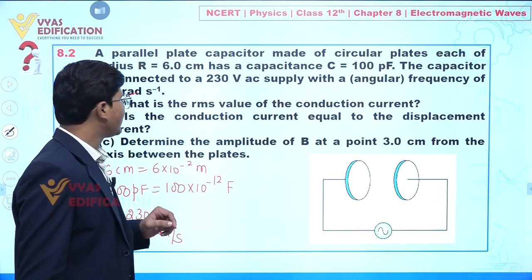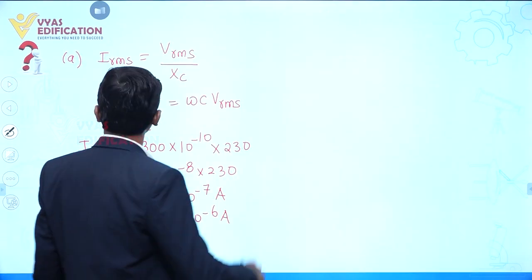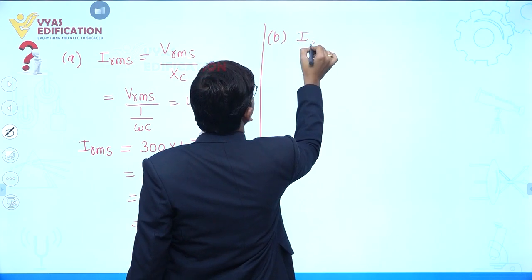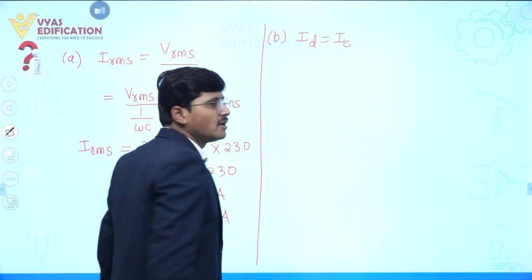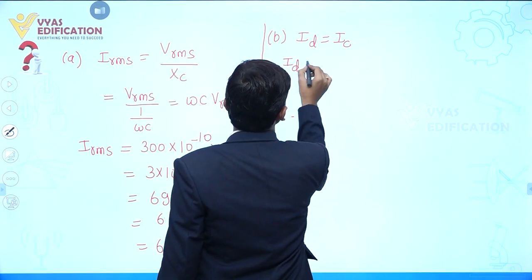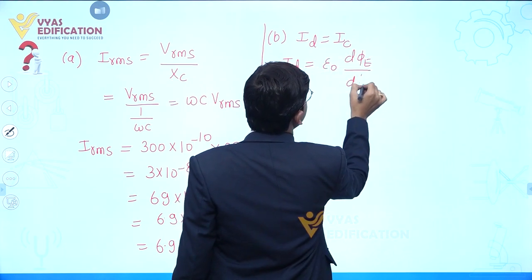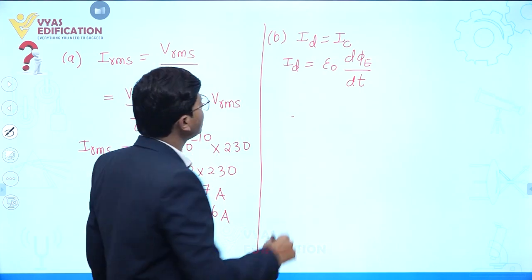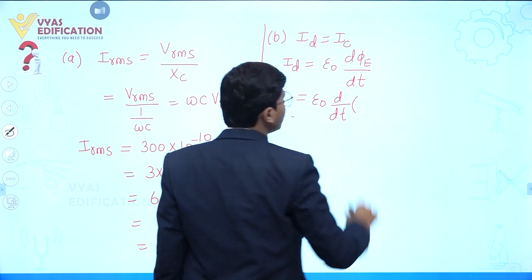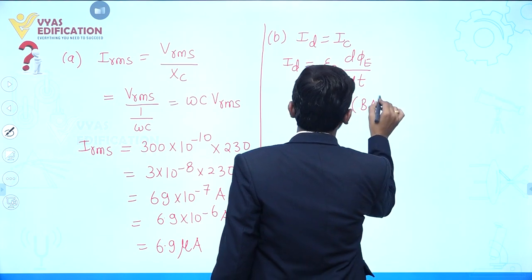In part B, it is asked: is the conduction current equal to displacement current? Yes, definitely, conduction current is equal to displacement current. There is one formula for displacement current: displacement current I_d = ε₀ × dΦ_E/dt. From here we can write this as ε₀ × d/dt of (Φ_E), where Φ_E = E · A.